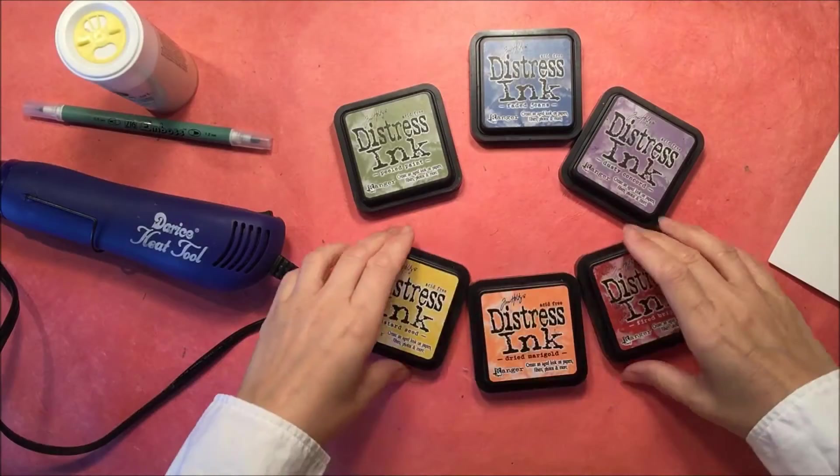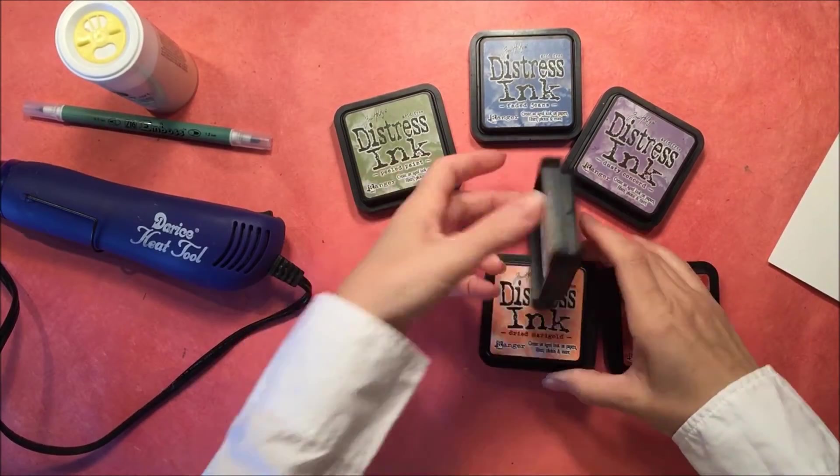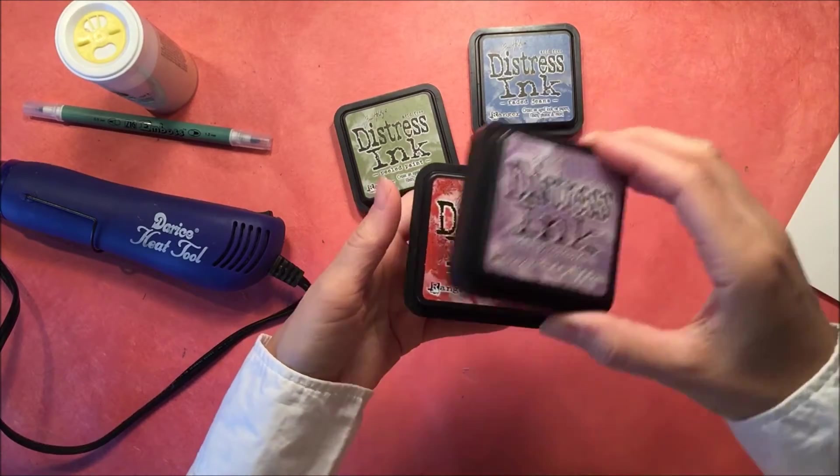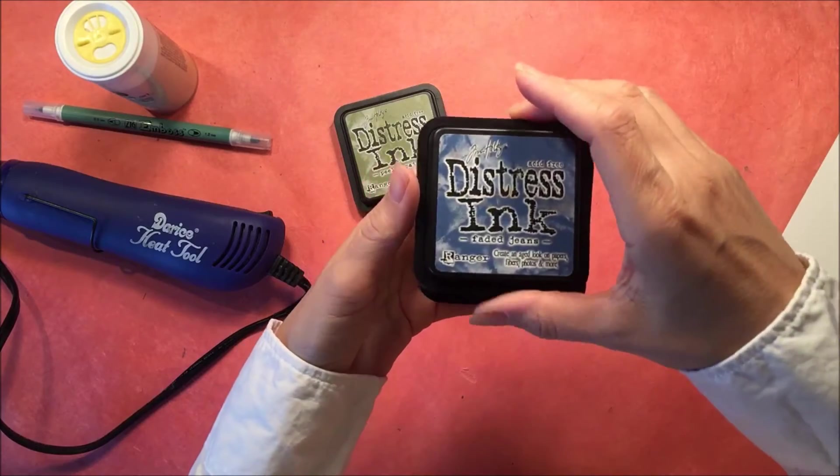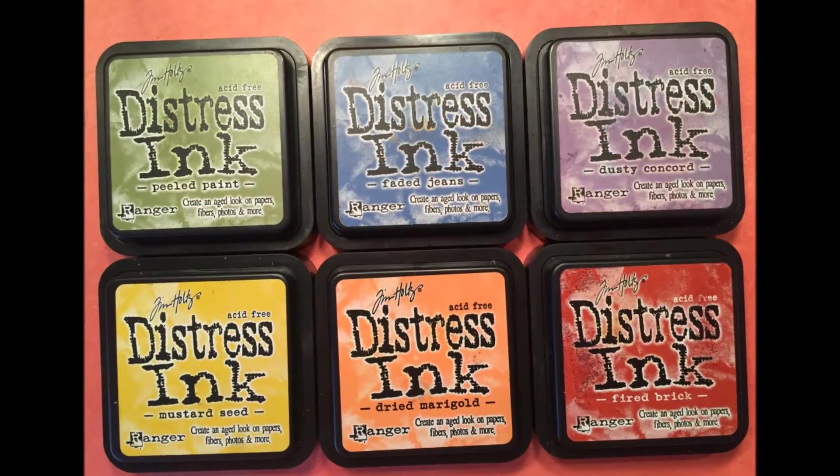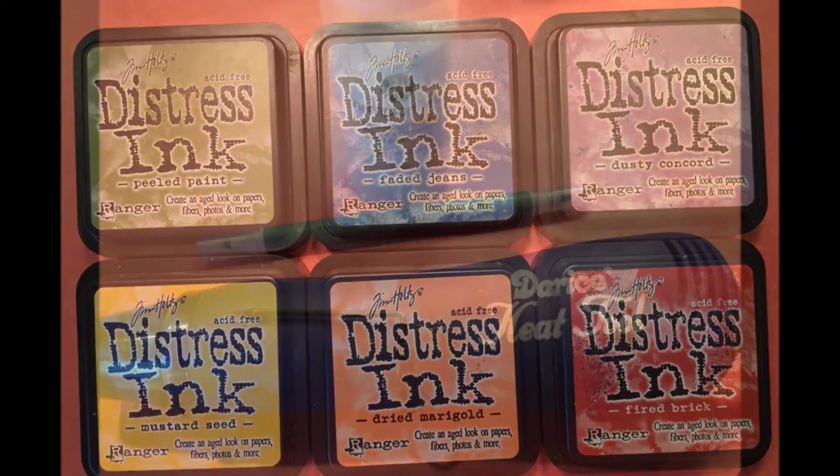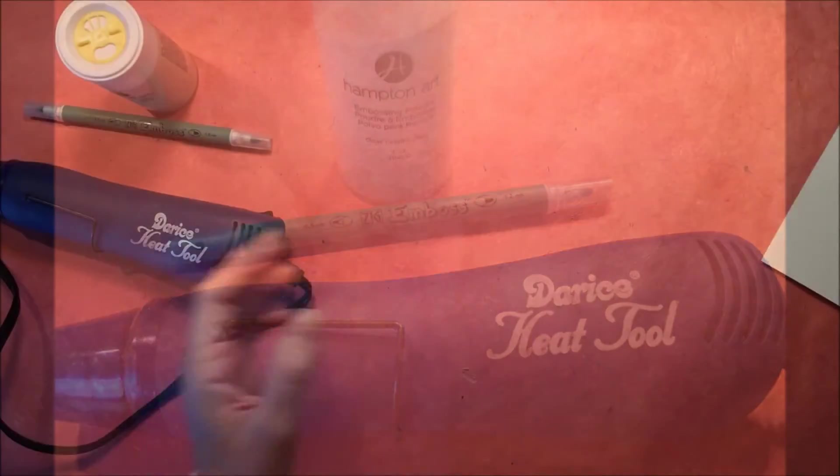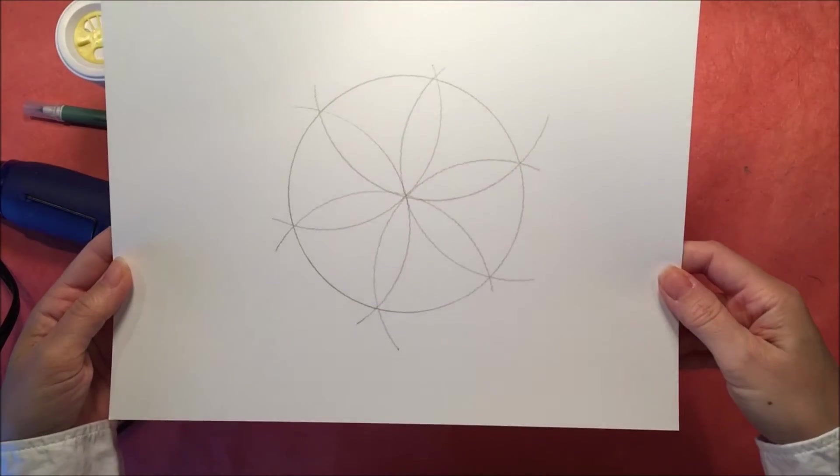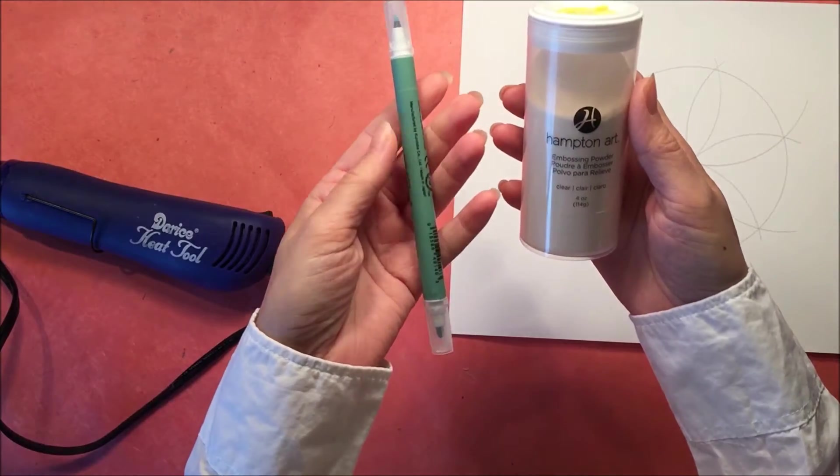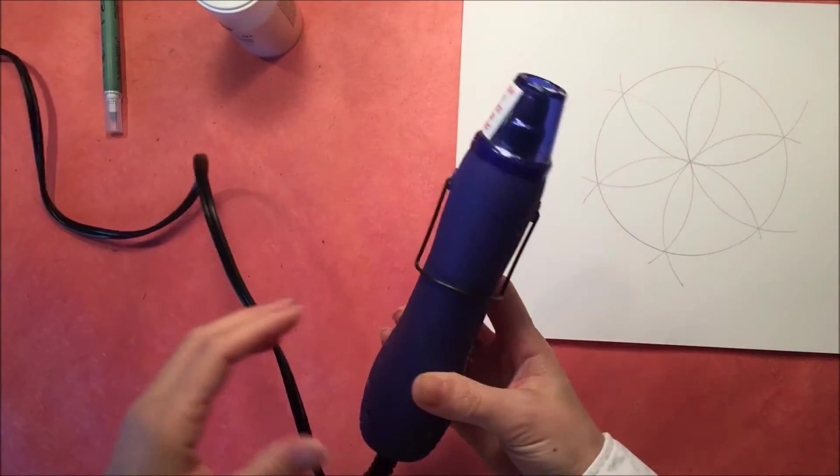Now we want to watercolor it. I'm using Distress Inks in the colors of the rainbow: yellow, orange, red, purple, blue, and green. These Distress Inks can be found at dickblick.com or at craft stores. You'll also need a heat tool, an embossing pen, and some embossing powder. I'm using clear embossing powder here and later I use white embossing powder.